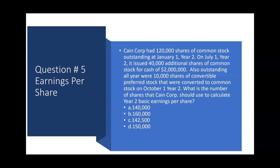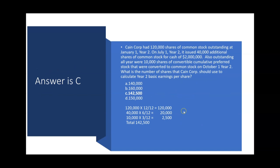For the weighted-average calculation: the original 120,000 shares were outstanding all 12 months — that equals 120,000 weighted-average shares. The 40,000 shares issued July 1 were only outstanding for six months, equivalent to 20,000 shares on a weighted-average basis. The 10,000 converted preferred shares were outstanding from October 1 to December 31 — three months — so 10,000 times 3/12 equals 2,500 shares. Adding all three: 120,000 + 20,000 + 2,500 = 142,500 weighted-average shares, which is letter C.